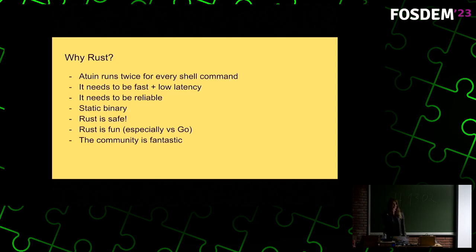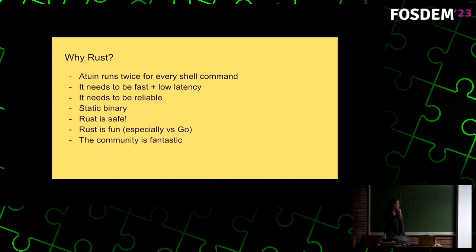So why Rust? This is the Rust dev room, after all. Atuin runs twice for every shell command you run — just before and just afterwards — which lets us get the timing data and everything else. If we had latency from an interpreter starting up or a runtime doing whatever it does, the experience would not be great. If you added 50 to 100 milliseconds to every command you ran, people would pretty rightfully complain. So Rust fits the bill very nicely there.